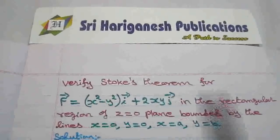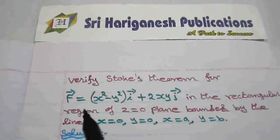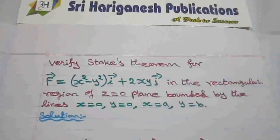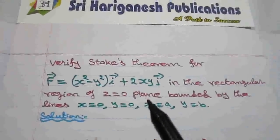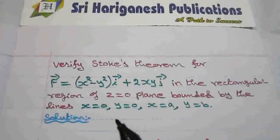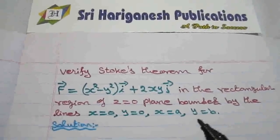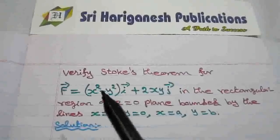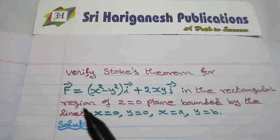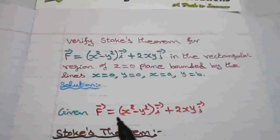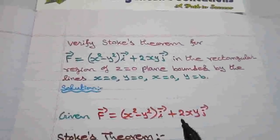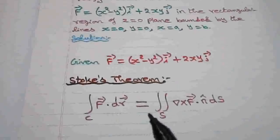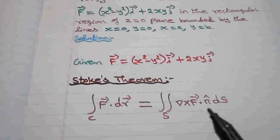One problem based on Stokes Theorem: Verify Stokes Theorem for F vector equal to (x² - y²)i + 2xy j, in the rectangular region of the z = 0 plane bounded by the lines x = 0, y = 0, x = a, and y = b. The Stokes Theorem states: integral over C of F·dr equals double integral over S of (del cross F)·n dS.